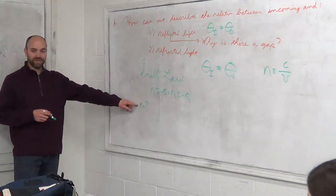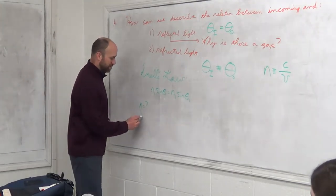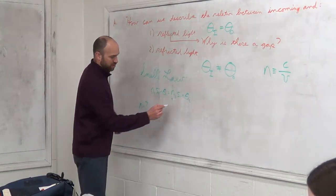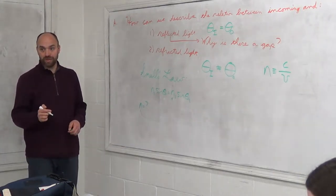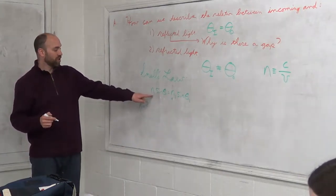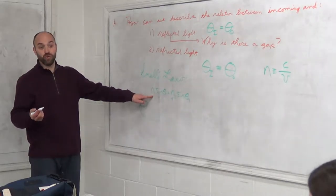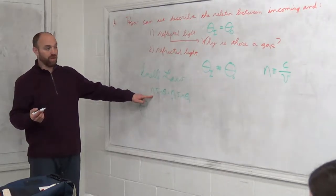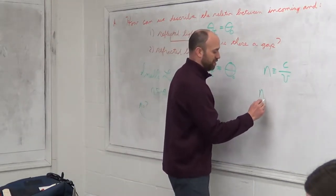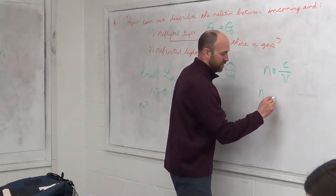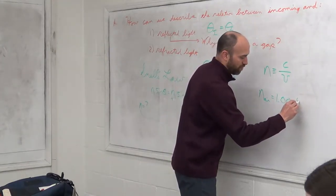I want you to find out what N is. This would be N2 — the stuff that the light went into. The light started out in air, so you need to know what the N of air is. I'll tell you: N for air is 1.0004. It's almost 1 — most books just say it's 1.